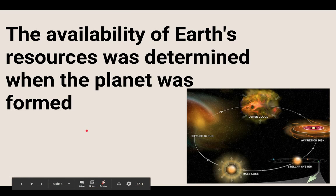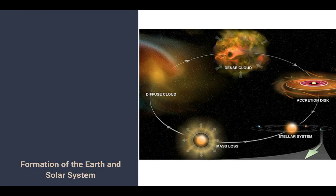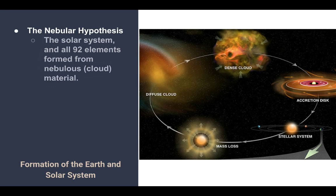So moving forward, there's 92 elements that are available to us from Earth. The availability of these resources occurred when the planet formed 4.6 billion years ago. And the theory we use for this is the nebular hypothesis. A brief version of this hypothesis is that a little over 4.6 billion years ago, we were this dense cloud just kind of floating in space.